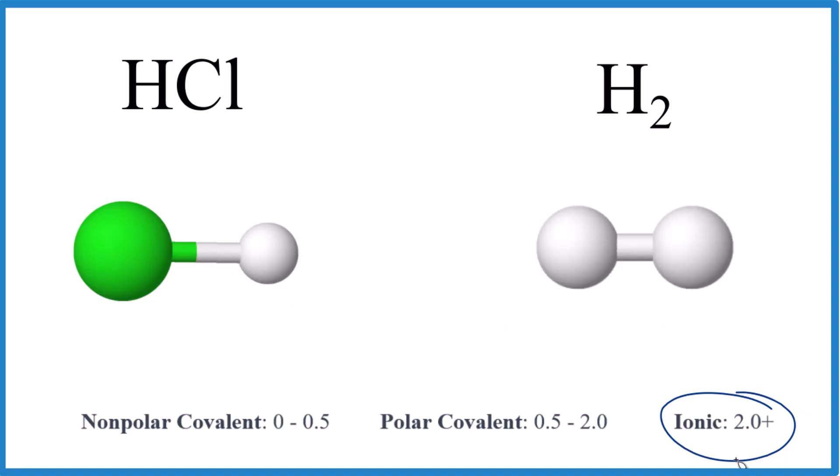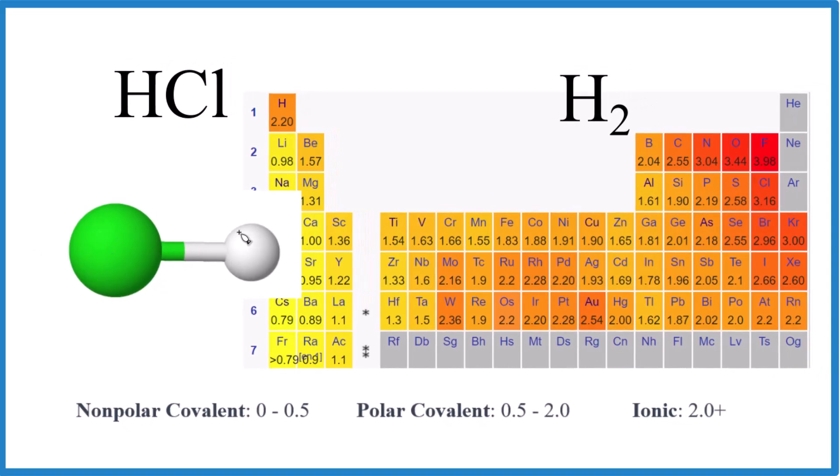And we can even look up the electronegativity. So chlorine is right here and hydrogen right here. So 3.16 minus 2.20. That's 0.96. That means this is polar covalent. And the electrons in this bond, they're going to spend a little more time with the chlorine. That'll make it negative. That'll give it a pole.